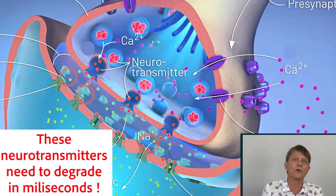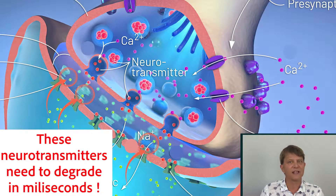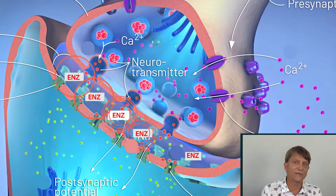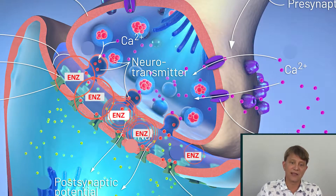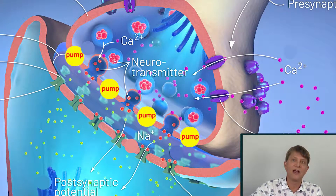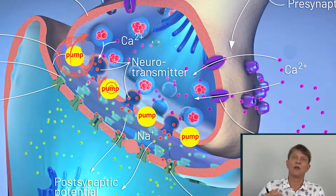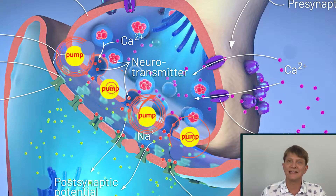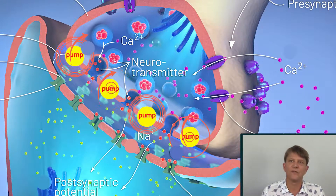So how are we going to degrade the neurotransmitter down at the synaptic cleft? Two ways: we have an enzyme there that degrades it very quickly, and a second mechanism is a reuptake pump that pulls the neurotransmitters back into the first neuron. All of that happens within a few milliseconds.